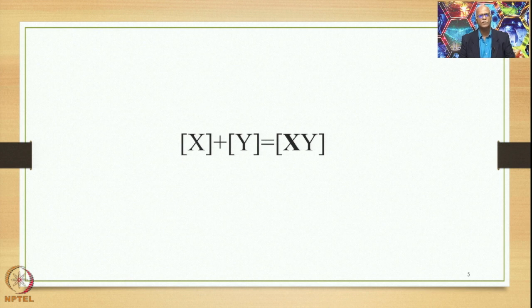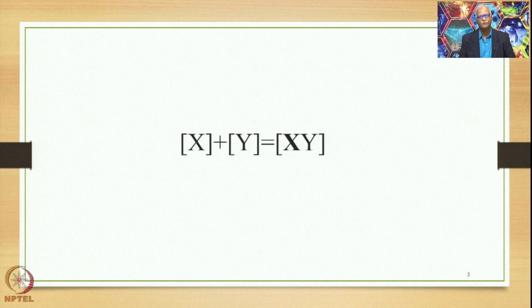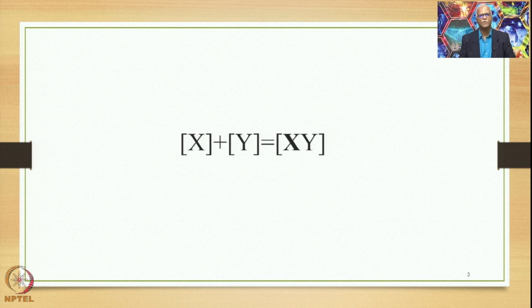To show the interrelation of XY with its constituents X and Y, we say that in XY, which is one unit, X acts as the head. In the Avyayibhava Samasa, X is invariably — with a few exceptions — always an Avyaya, an indeclinable. And XY as one unit is also termed as Avyayibhava Samasa by the sutra Avyayibhava.